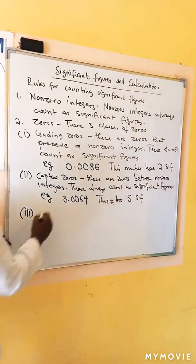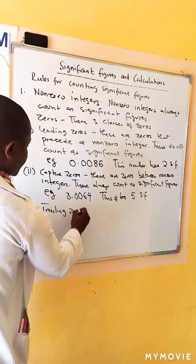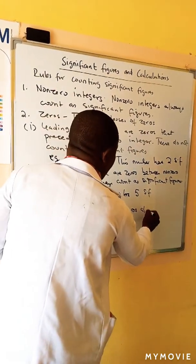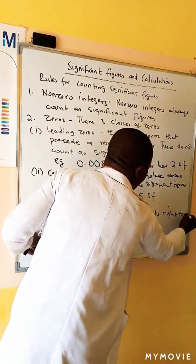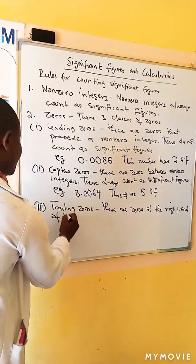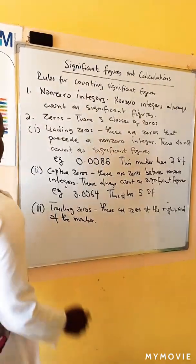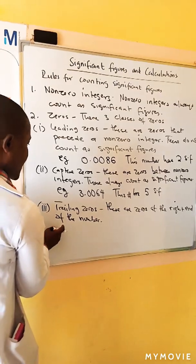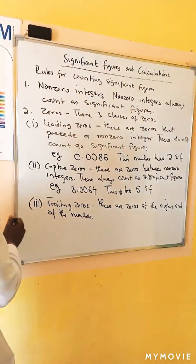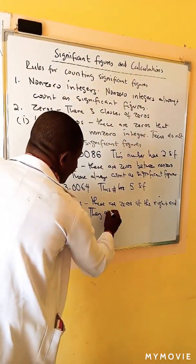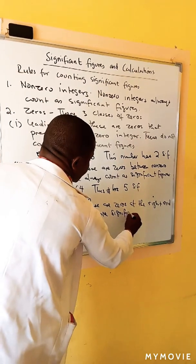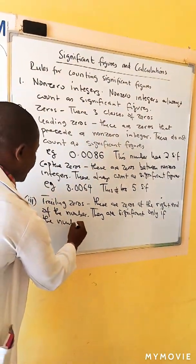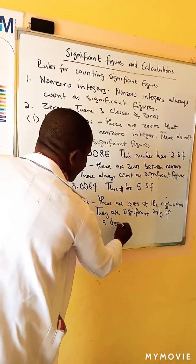Three: trailing zeros. These are zeros at the right end of the number. These do not count as significant figures, or you can say they are significant only if the number has a decimal point.